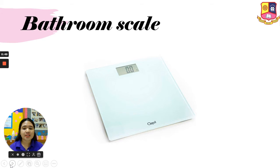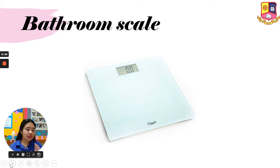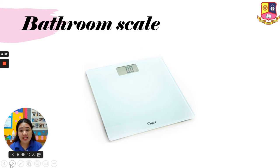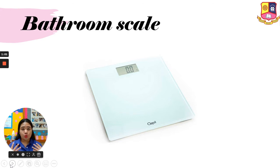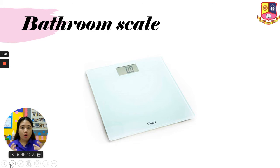The first scale is a bathroom scale. A bathroom scale is a scale on the floor which a person stands on. So if you want to know your weight, this is the ideal weighing scale — if you stand on it, it will show your weight.